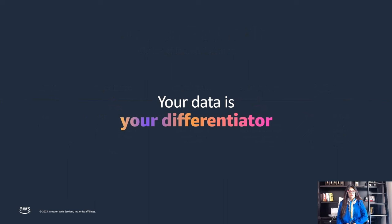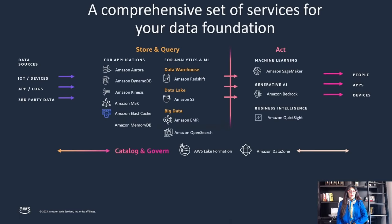Your data is your differentiator for generative AI. While FMs can be powerful out of the box, to be truly useful to your organization, they need access to the key enterprise data sources. To ensure you have high quality data to train your own models or customize FMs for your use cases, you need a strong data foundation, with access to a comprehensive set of services that account for the scale, volume, and variety of data you need to manage. In this video specifically, we will focus on how ElastiCache for Redis can support a couple of application patterns for building a robust Gen AI chatbot or a virtual assistant.